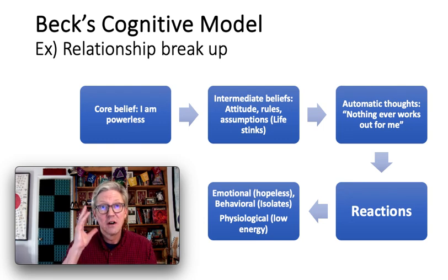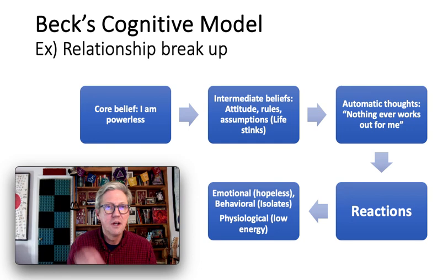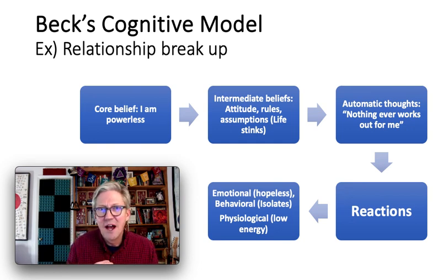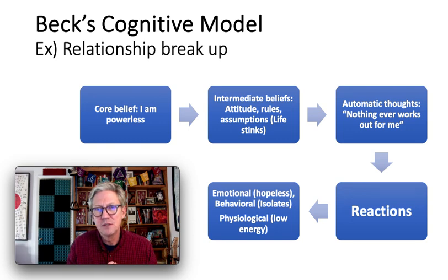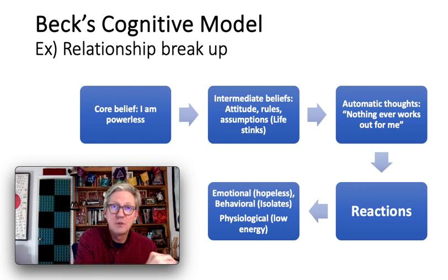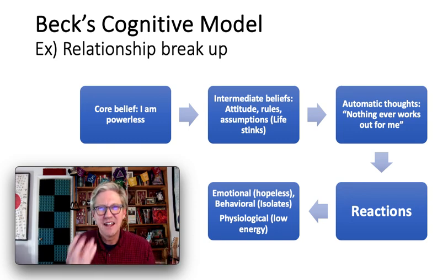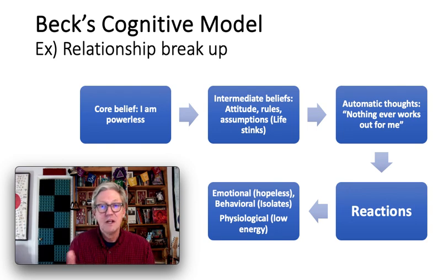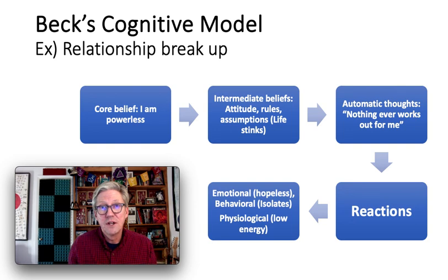Then we have the automatic thought, which the person is aware of — this is what they bring to counseling. 'Nothing ever works out for me' or 'I am not successful in relationships.' They may not be able to trace that back to a core belief, but they know it's in their head. They have this automatic thought — 'nothing ever works out for me' — as evidenced by this relationship breakup, and possibly others in their past.